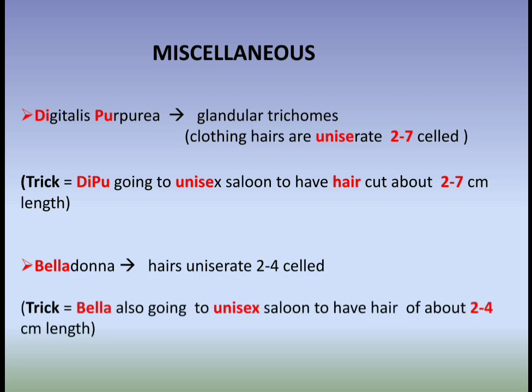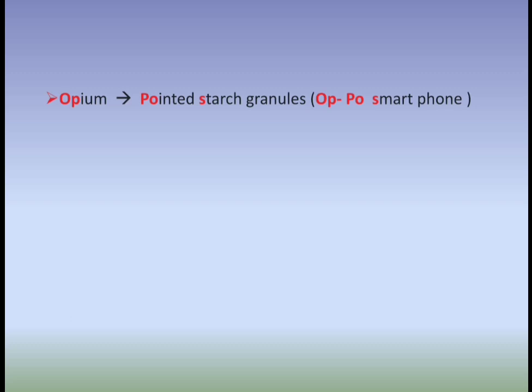The next drug is Opium, which shows pointed starch granules. The trick to learn this is: 'Oppo — Opium pointed — Oppo smartphone.' This makes it very easy to remember.